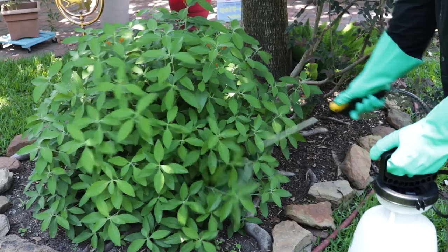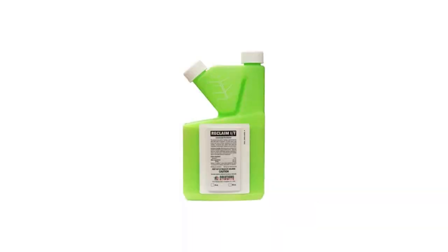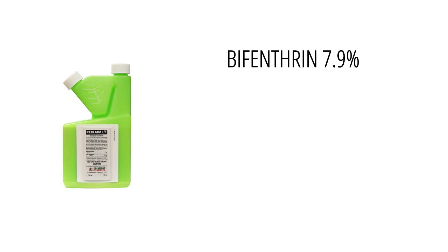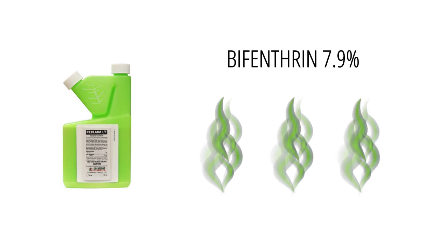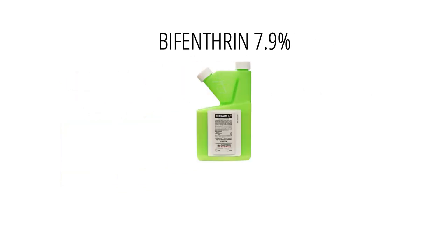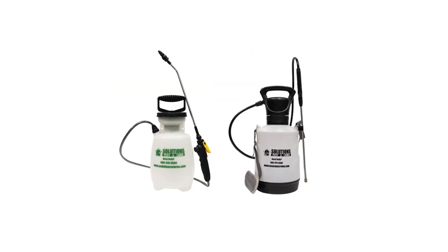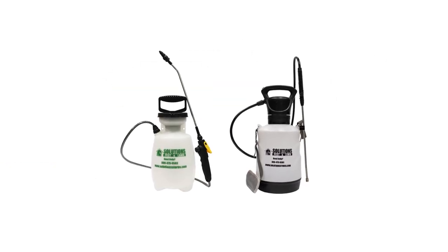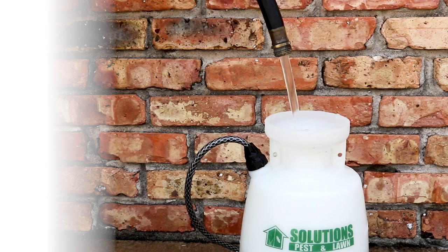To get rid of tussock moths and their caterpillars, you'll need to use an insecticide with long-term residual protection — a liquid concentrate made with the active ingredient bifenthrin. The bifenthrin will work to kill pests it comes in contact with and will also leave a residual that will continue to control the area for labeled pests. With our concentrate made with 7.9% bifenthrin, we recommend using 0.25 fluid ounces of product per one gallon of spray solution, applied using a one or one-and-a-half gallon handheld sprayer.